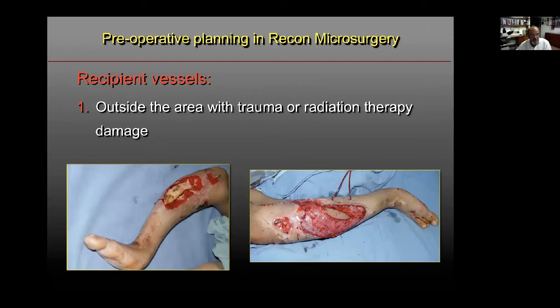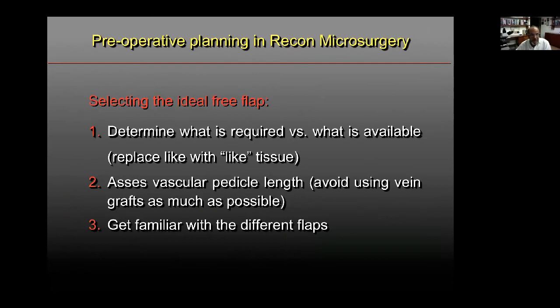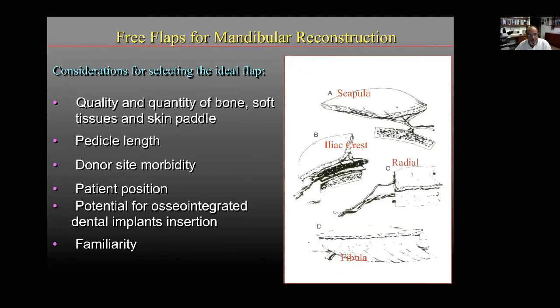When selecting the ideal free flap, determine what is required versus what is available, and follow the principle of replacing like with like tissue. It's important to assess the vascular pedicle and be familiar with all different flaps. For example, in mandible reconstruction there are four free flaps available—drawn to scale one-to-one—showing the quantity and quality of bone, tissue, and skin paddle harvestable from each. Consider pedicle length and functional issues like the potential for osteointegrated dental implant insertion.